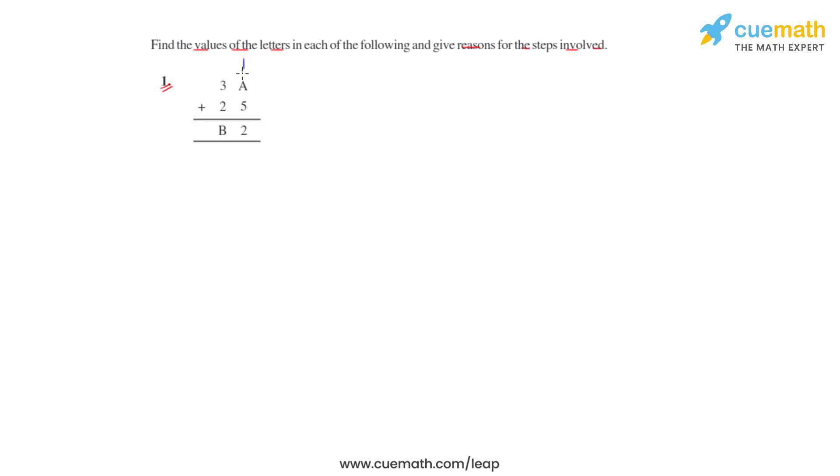Let us study the sum in the ones column. Here we see that the sum of A and 5 results in a number whose units digit is 2. This is only possible if the value of A is 7, as we know that when 7 is added to 5, it results in the number 12, where 2 is the ones digit.